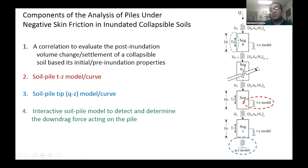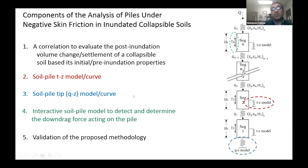We also need an interactive soil-pile model to detect the relative settlement between the soil and the pile. We need to know if the pile is settling more than the neighboring soil, or the soil is settling more than the pile. When the soil settles more than the pile, it tries to drag the pile down, generating down drag force. Validation of the proposed methodology is another problem — finding a full-scale load test dealing with down drag force caused by collapsible soil is really an uphill battle.